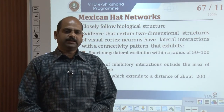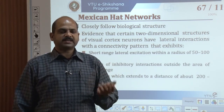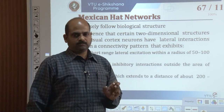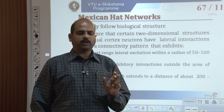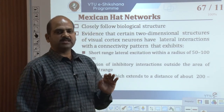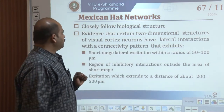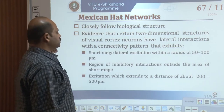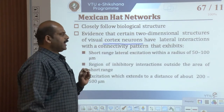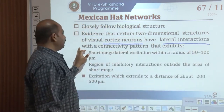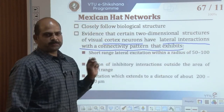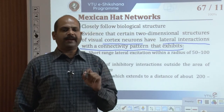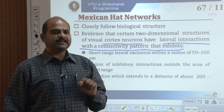We discuss the behavior of a competitive layer of neurons with self-excitatory and lateral inhibitory connectivity. It was established that the behavior of such networks strongly depends on the nature of the neuron signal function. Biological evidence shows that two-dimensional structures of visual cortex neurons have lateral interactions with a specific connectivity pattern. A faster-than-linear signal function results in winner-take-all behavior, called hard competition.